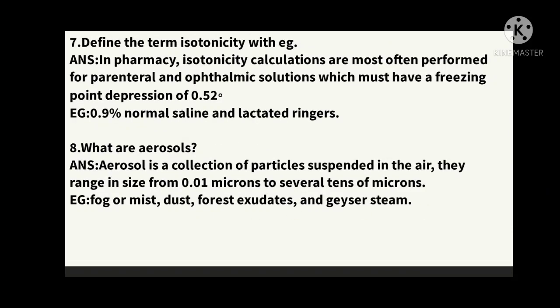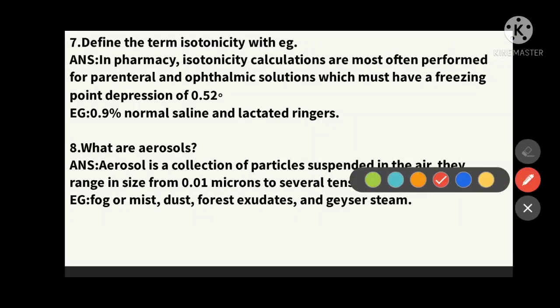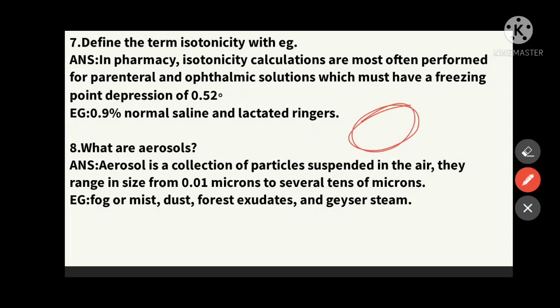The seventh question: define isotonicity with an example. In pharmacy, isotonicity calculations are most often performed for parenteral and ophthalmic solutions. Isotonicity means equal osmotic pressure — no swelling and no shrinking. 'Iso' means same; isotonic solutions cause no change in cells. Examples: 0.9% normal saline and lactated Ringer's solution. These have a freezing point depression of 0.52°C.